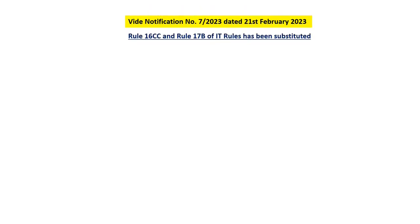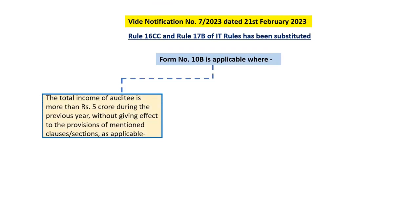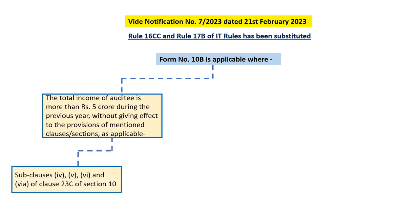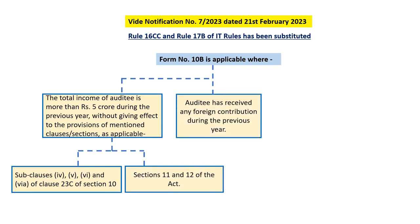Wide Notification Number 7/2023 dated 21st February 2023, for Assessment Year 2023-24 onwards, Rule 16CC and Rule 17B of the Income Tax Rules have been substituted to provide that Form 10B shall be applicable if the total income of the auditee will be more than Rs. 5 crores during the previous year, without giving effect to the provisions of Section 10(23C) clauses 4, 5, 6, and 6A and Sections 11 and 12 of the Income Tax Act.